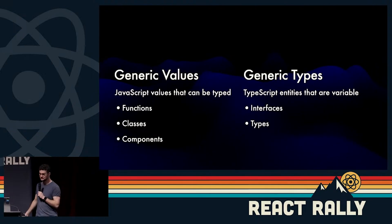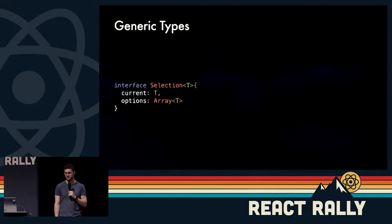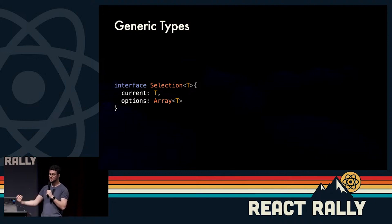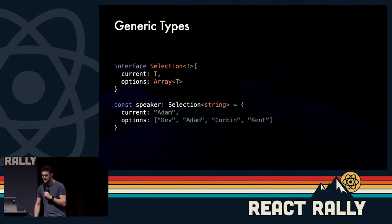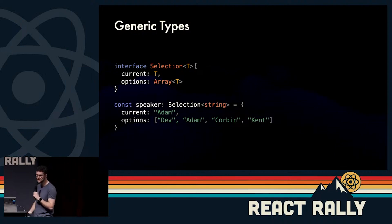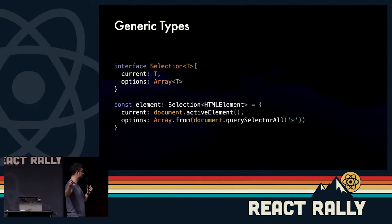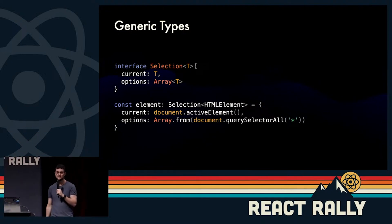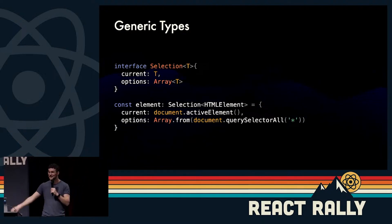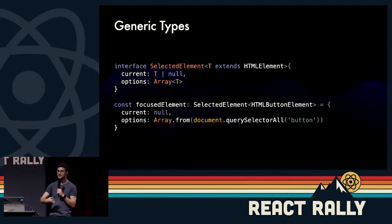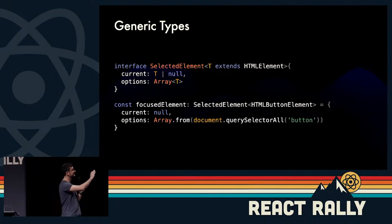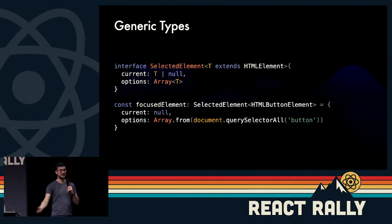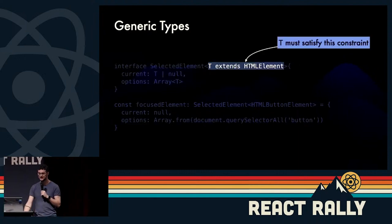We also have generic types. Here we can create some interface to track our current selection and an array of all possible selections of that same type. So we can use that to track things like the names of speakers, or keep track of something like the currently focused DOM element. You can also narrow the type in an interface — instead of any old type, we explicitly say that our selected element is going to extend the built-in type HTMLElement, so it must satisfy this type constraint. This will be helpful later when we build our generic polymorphic component.